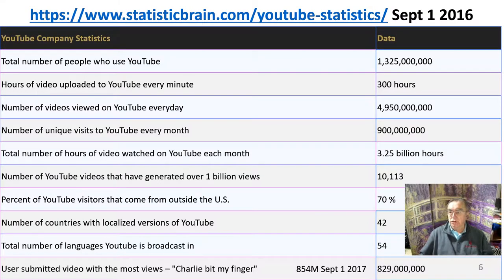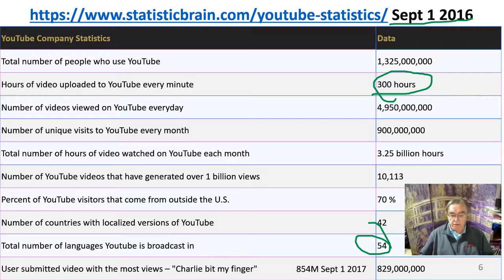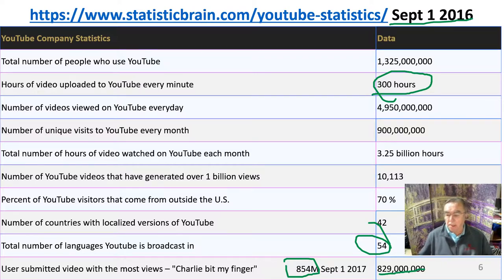Here are the YouTube statistics as of September 1, 2016 — one of the few places with real numbers. The upload rate is 300 hours per minute, with content available in 54 languages. The user-submitted video with the most views was Charlie Bit My Finger at 829 million at that date, now at 854 million. There were 3.25 billion hours of video viewed per month, over 10,000 videos have generated over a billion views, and 30% of viewers are from the US.